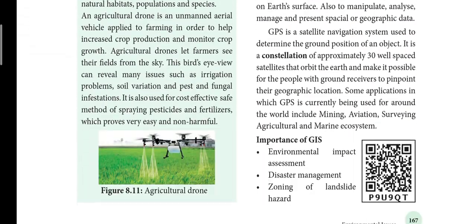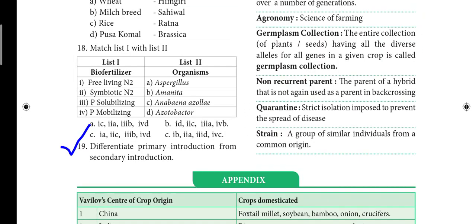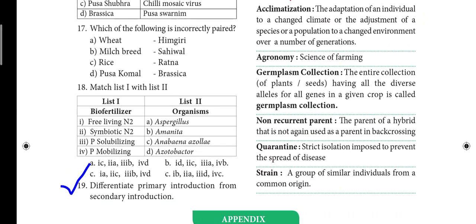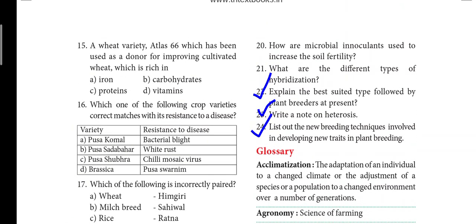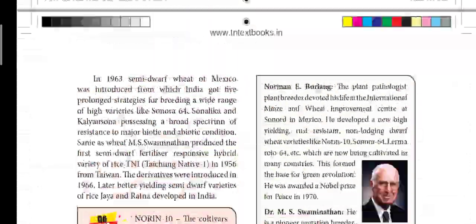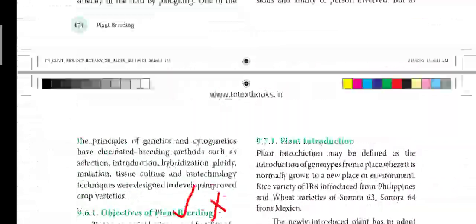Moving on to the 9th lesson: Plant breeding. Question 19: Differentiate primary introduction from secondary introduction. Question 22: Explain the best-suited type followed by plant breeders at present. Question 23: Write a note on heterosis — important 2-mark, sometimes 3-mark. Question 24: List out the new breeding techniques involved in developing new traits in plant breeding.